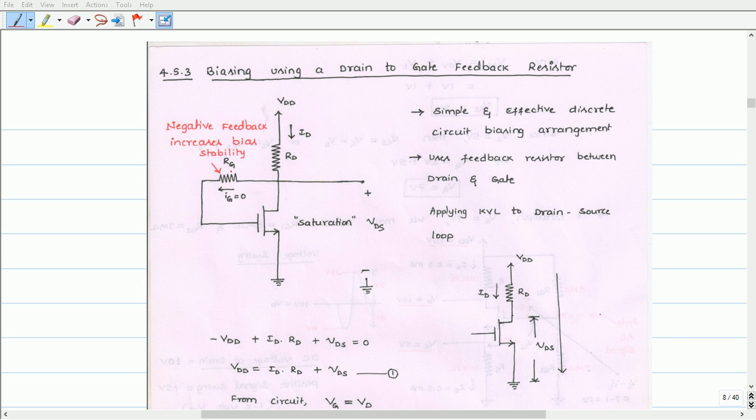Here we connect the gate resistor between the gate and drain of the MOSFET. The RG value typically is in megaohms, which is a large value that forces the DC voltage at the gate same as the DC voltage at the drain. Since drop across the RG is zero due to the gate current being zero, the RG connected between drain to gate provides a negative feedback.